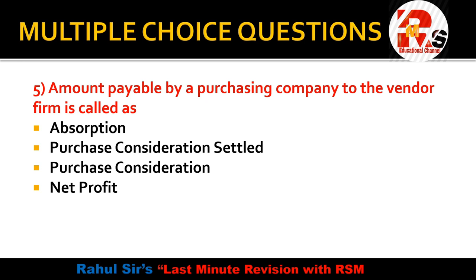Question 5 is from the chapter of amalgamation. The question asks: the amount payable by a purchasing company to the vendor firm is called — absorption, purchase consideration, settled purchase consideration, or net profit? The answer is purchase consideration. In amalgamation, whenever we purchase any business, we pay them a monetary consideration, and that is called purchase consideration. When a business is sold, the buyer pays cash or gives shares — that monetary consideration is the purchase consideration.